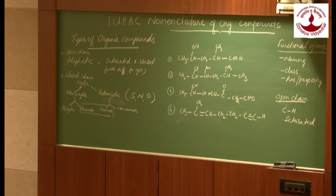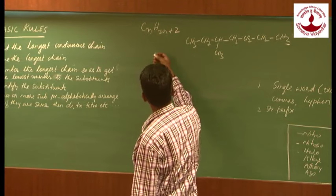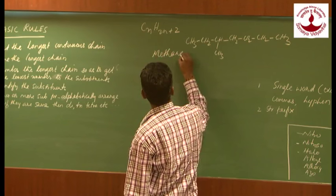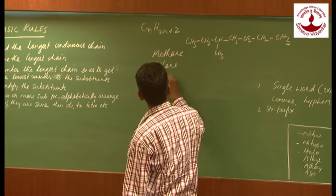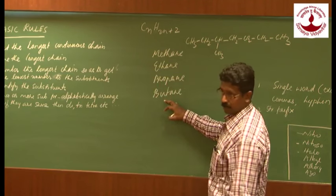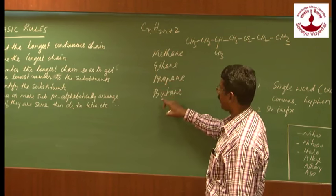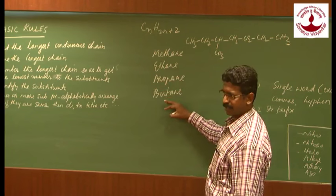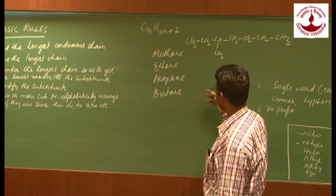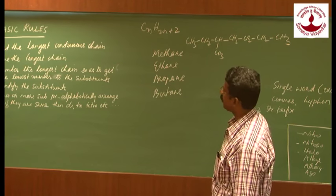Let us see an example. Alkanes have the general formula CₙH₂ₙ₊₂. The first four members retain the same trivial name: methane, ethane, propane, and butane. They are retained in IUPAC nomenclature. From five-carbon compounds onward, systematic names are used. Methane is 1 carbon, ethane is 2 carbon, propane is 3 carbon, and butane is 4 carbon. So the first four names are the same in IUPAC nomenclature as well.